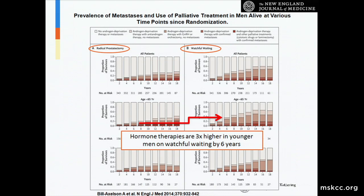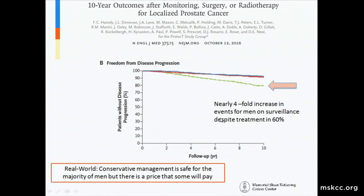Those who caught Dr. Mahal's talk yesterday about the negative impact of androgen deprivation therapy on erectile function and bone loss would know this is not a minor event — and it notably occurs in very young patients. Data from the PROTECT trial also reminds us that the idea that these patients are salvageable and their risk is negligible is not necessarily true, showing progression was almost four times higher in patients who underwent active surveillance, despite up to 60 percent being treated over the 10-year period of the trial.